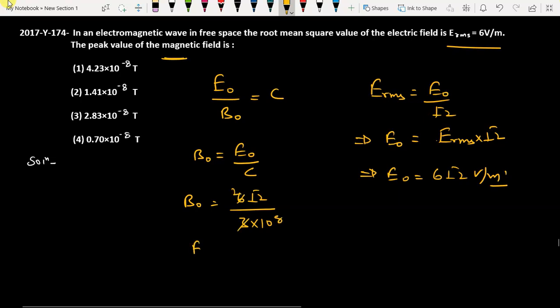So basically B_0 is 2 root 2 × 10^-8, which equals 2.8 × 10^-8 Tesla. This is the peak value of the magnetic field.